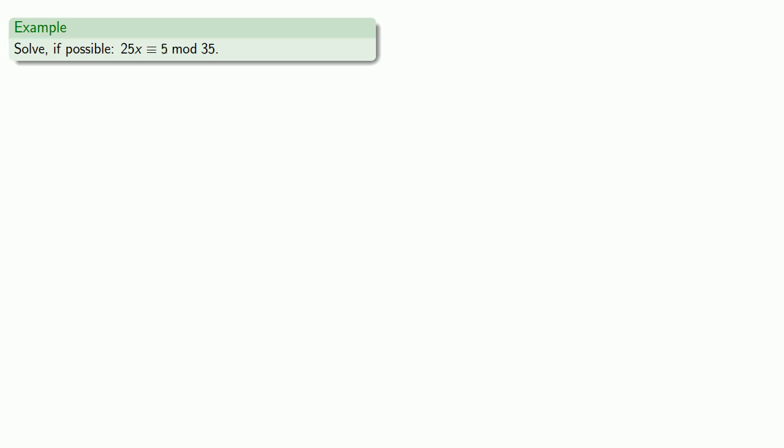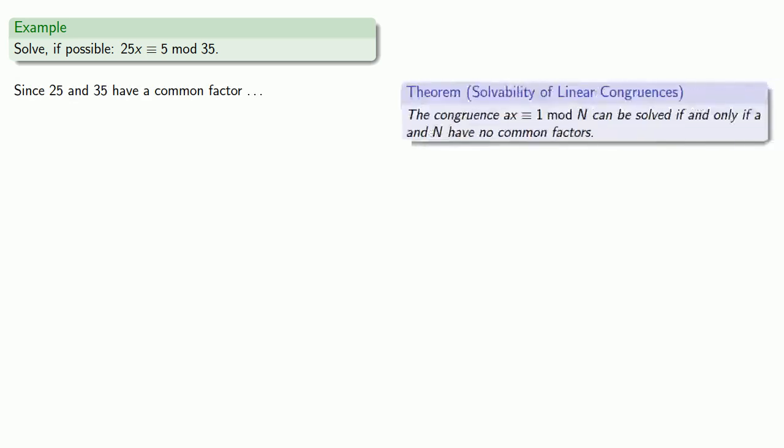Now you have to be careful with theorems, because you have to read the fine print. So let's solve, if possible, 25X congruent to 5 mod 35. So you might say, well, 25 and 35 have a common factor, and the theorem says that this problem is unsolvable. But you've got to read the fine print.